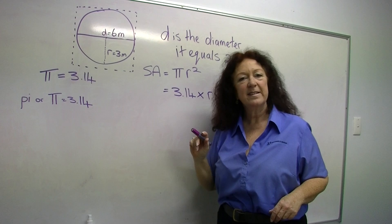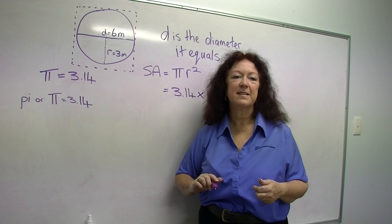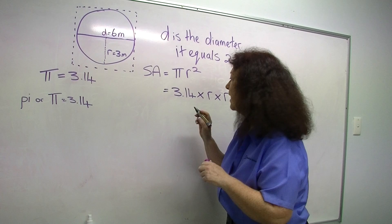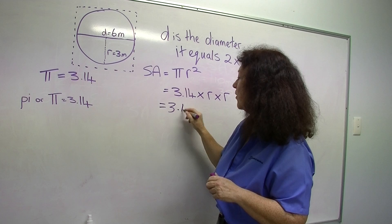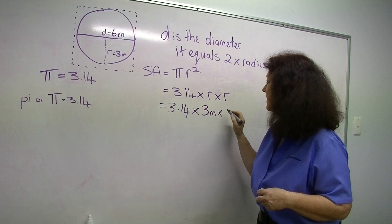So how do we work out the surface area? We just have pi times the radius squared. So the radius squared is just the radius times itself. Remember to write your units in when you're doing this and remember that we're going to end up with square metres. So we've got 3.14 for pi times our radius, which was 3 metres, times our radius again, 3 metres again.